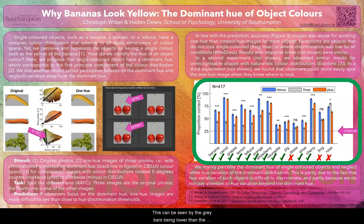Together these findings explain how human observers perceive and represent the colors of objects, but they may also be very useful for computational representations of object colors.